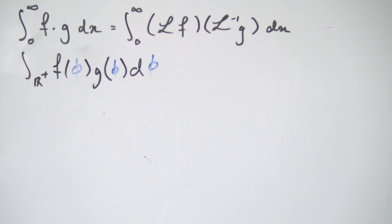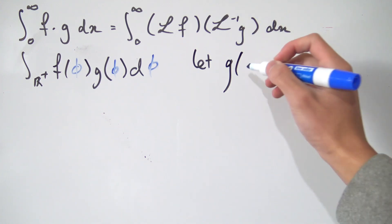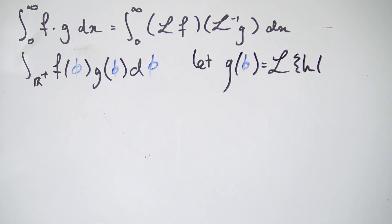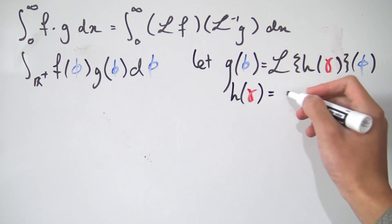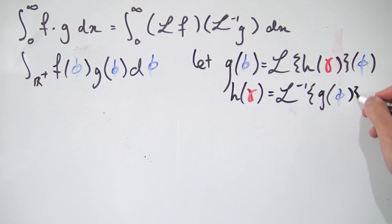What I'm going to do is a substitution — not the usual kind, but we're going to define g as the Laplace transform of some other function. So we let g(φ) be exactly the Laplace transform of some other function h, in a new variable γ, so this Laplace transform is in terms of φ. If we take the inverse Laplace transform of g, that gives us h(γ) back — so h(γ) is exactly the inverse Laplace transform of g(φ) with respect to γ, and we'll use this later.